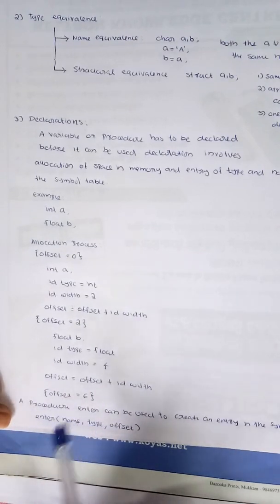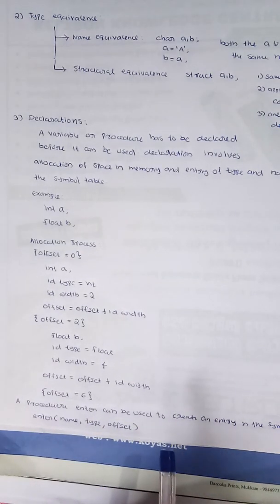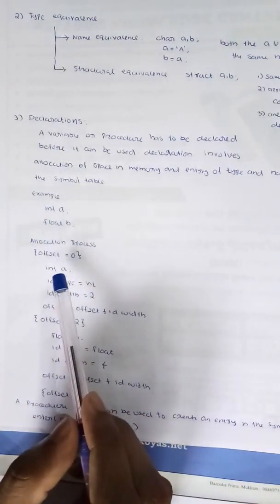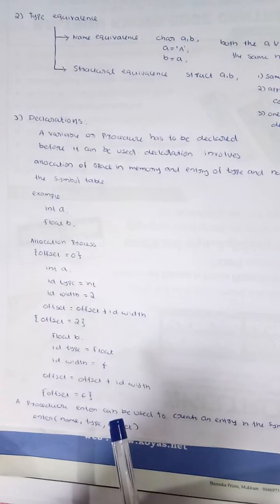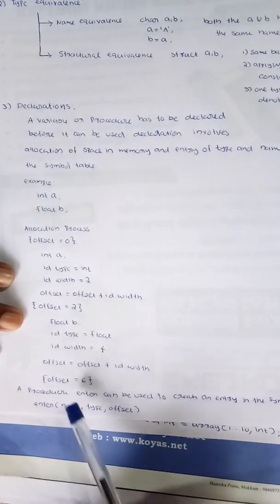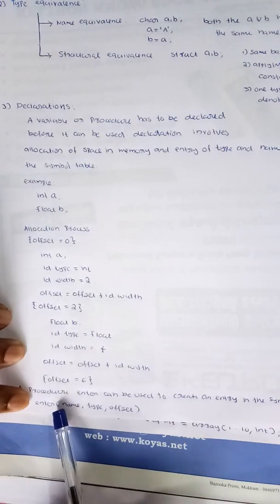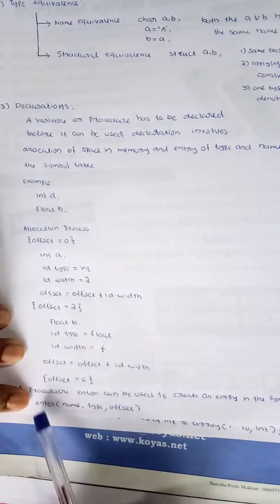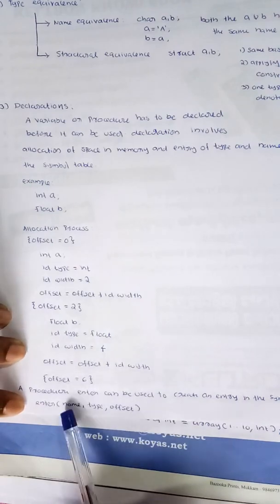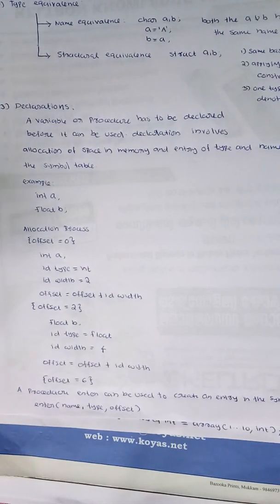The enter procedure can be used to create an entry in the symbol table. For example, entering float b into the symbol table. We use this procedure to store the name and type in the symbol table. This is how we declare a variable in the symbol table.